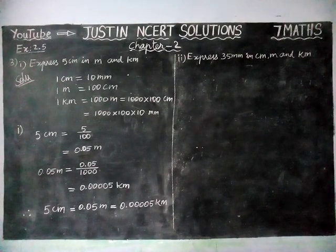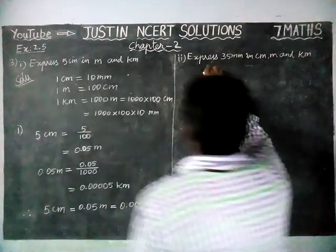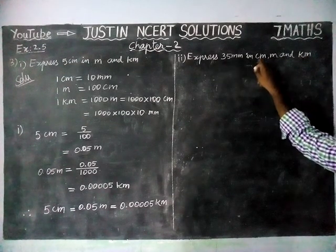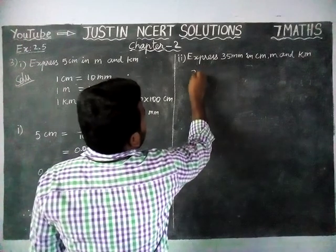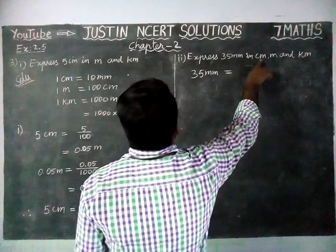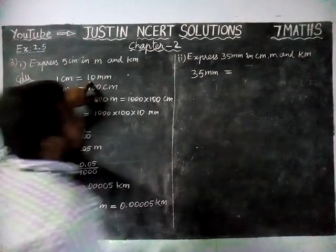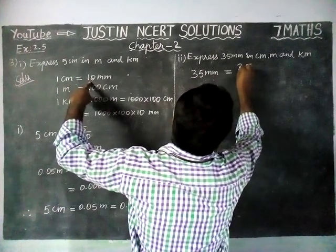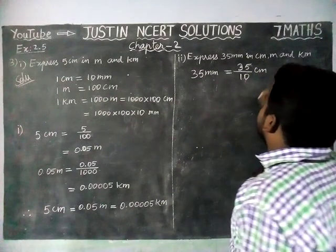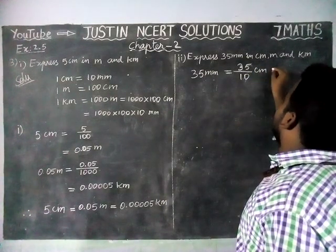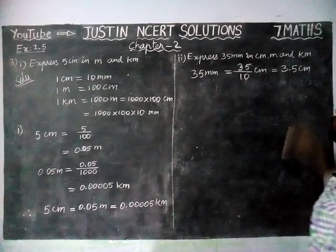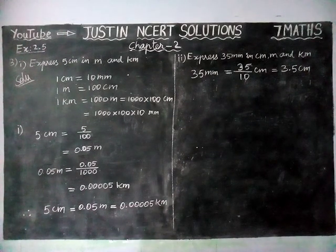Now we are going to check the second question: express 35 millimeter in centimeter, meter, and kilometer. We are going to convert this millimeter into centimeter. 35 millimeter is equal to — 1 centimeter is equal to 10 millimeter, so the answer is 35 divided by 10 centimeter. We have to make one decimal point, so the answer is 3.5 centimeter. So, 35 millimeter is equal to 3.5 centimeter.